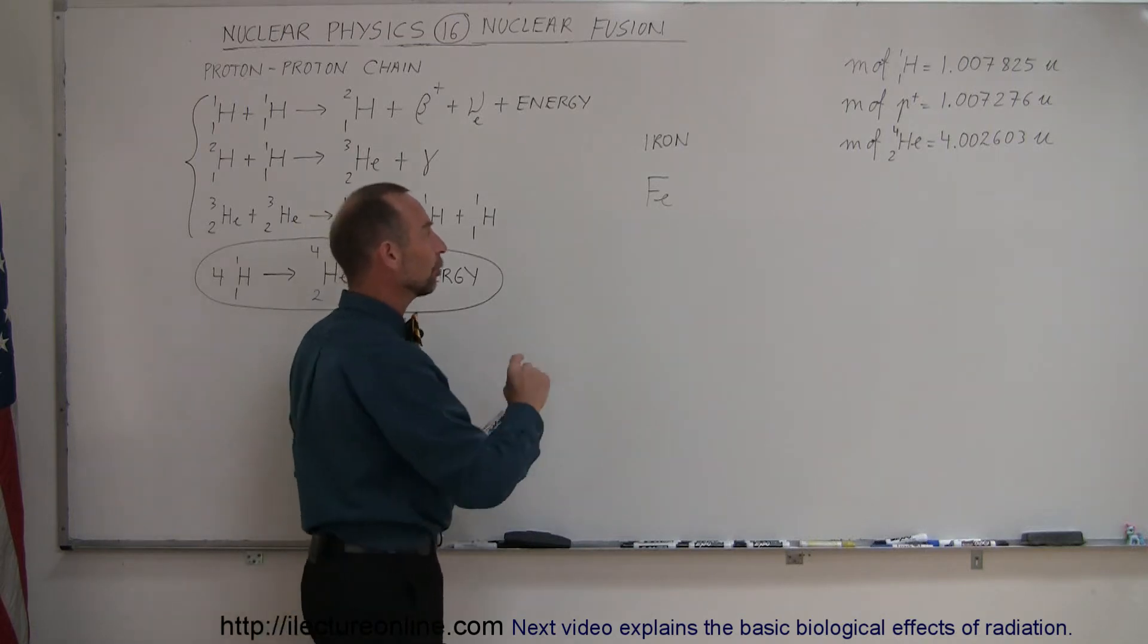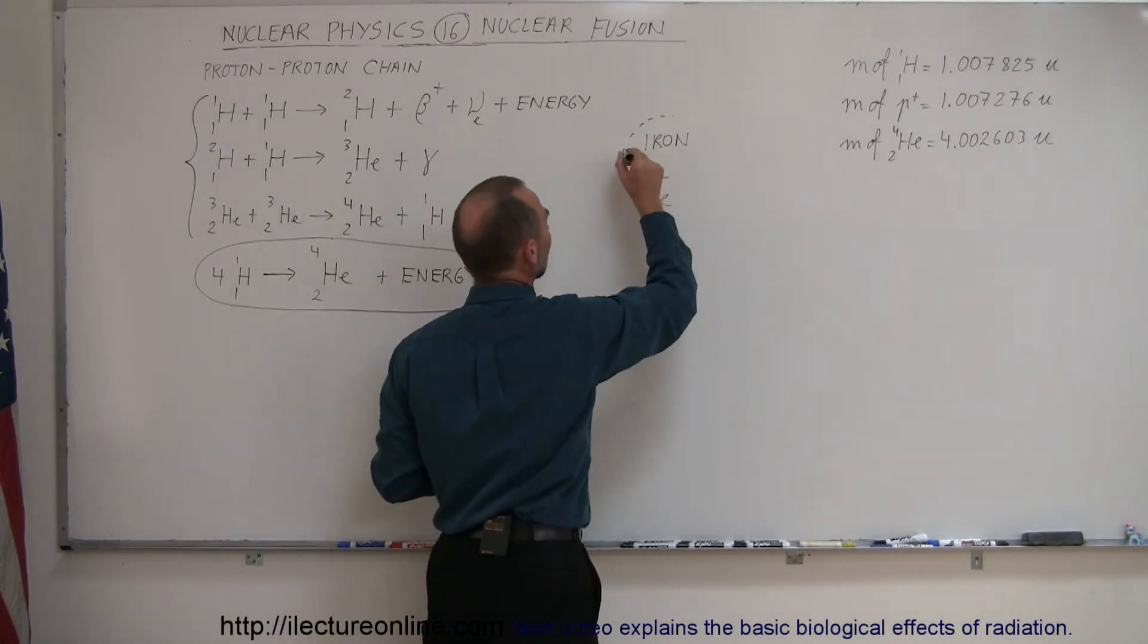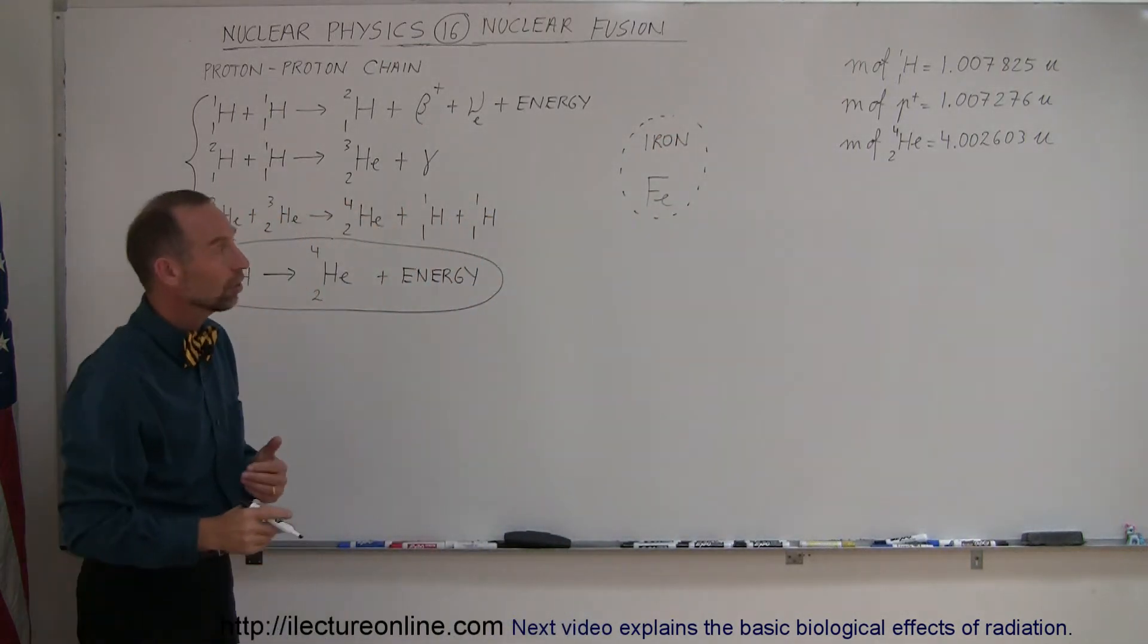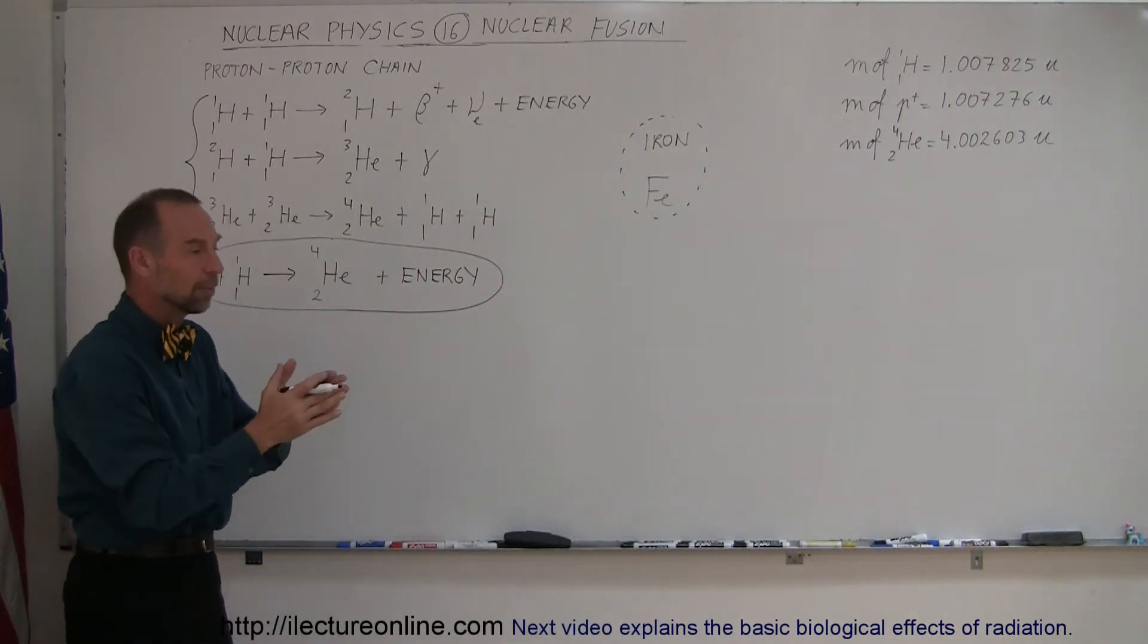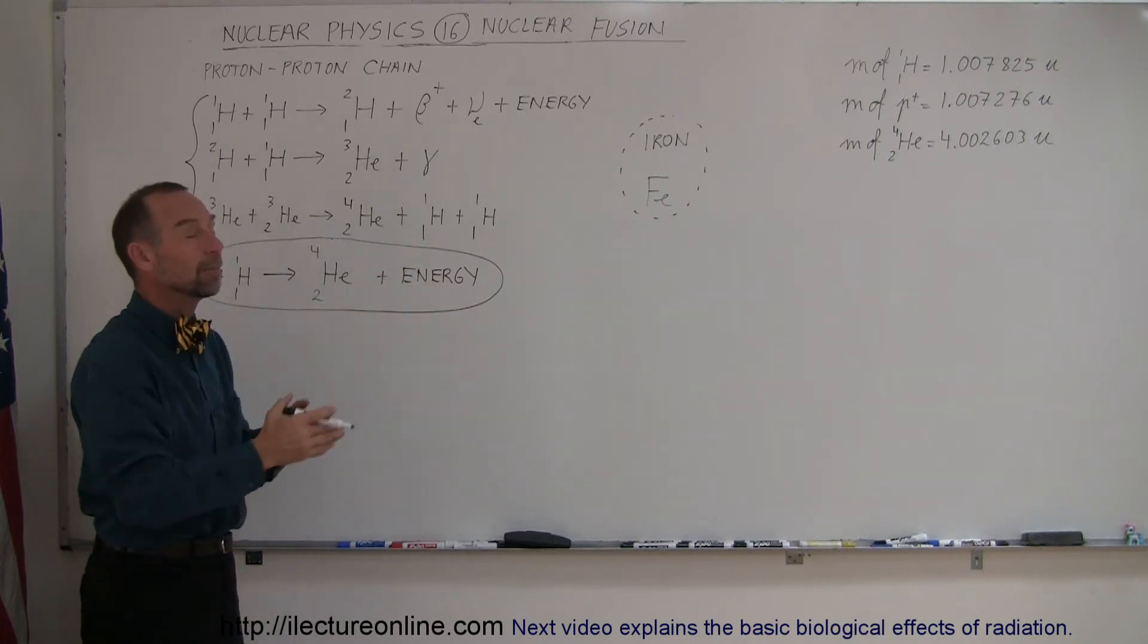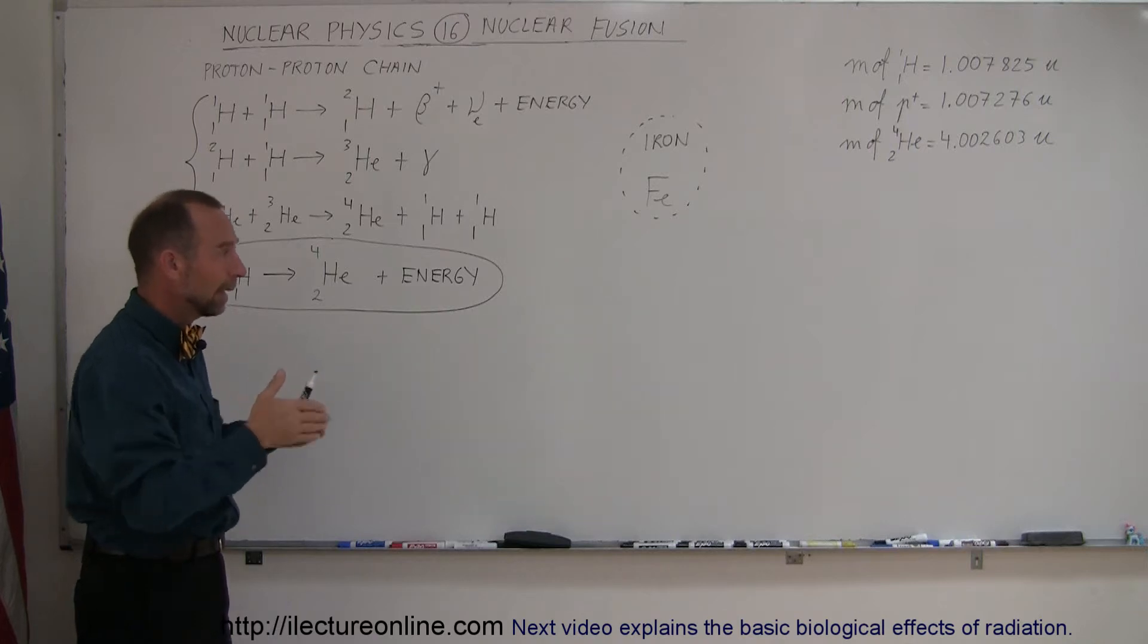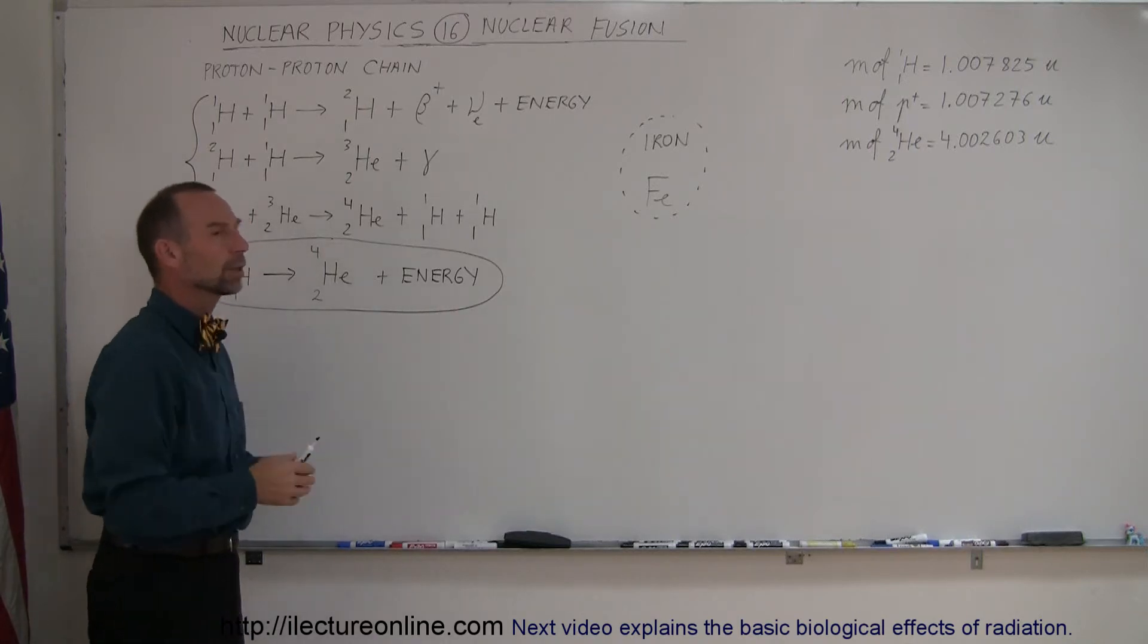Iron is that very special element because of this particular property—you can neither fuse it nor fission it. Fusing means putting smaller atoms together making something bigger, and fissioning means taking big nuclei and breaking them to make smaller nuclei.